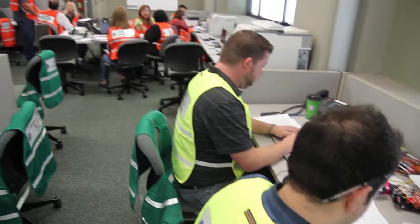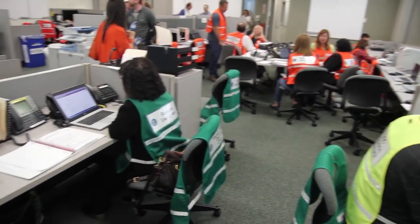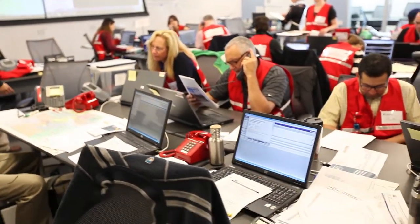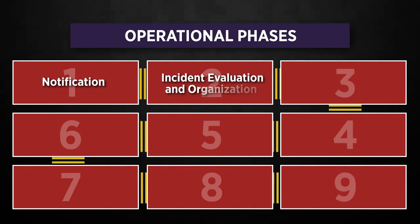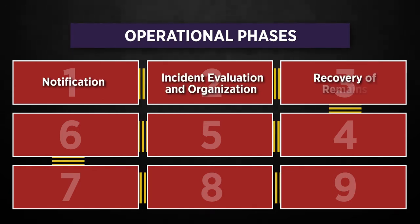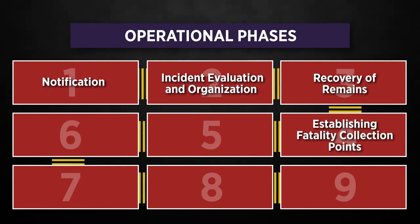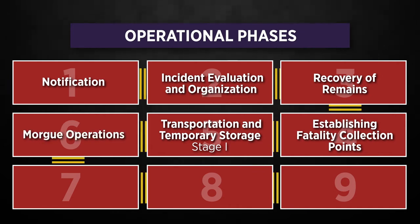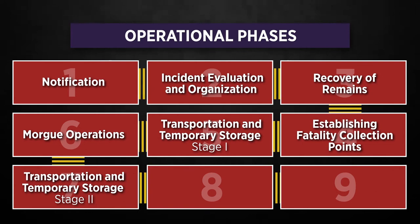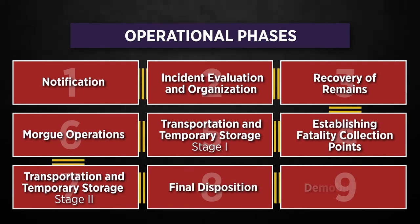To help you understand your support role to the coroner, it is important to first understand the operational phases of a mass fatality incident. A mass fatality incident is an event where the number of dead overwhelms the capability — both personnel and resources — of the local coroner's office. The operational phases include notification, incident evaluation and organization, recovery of remains, establishing fatality collection points, transportation and temporary storage stage one, morgue operations, transportation and temporary storage stage two, final disposition, and demobilization.